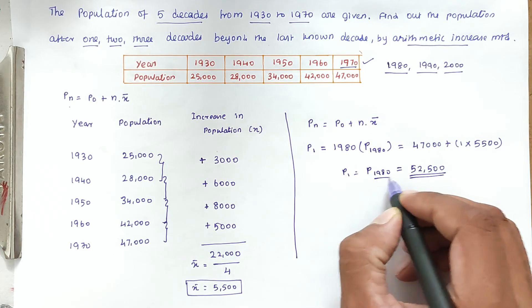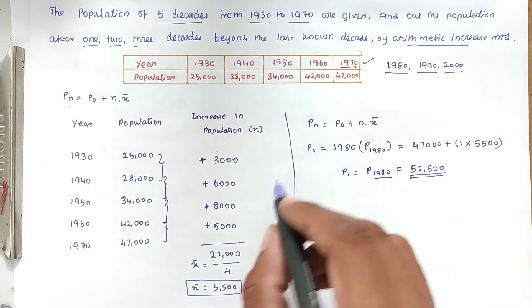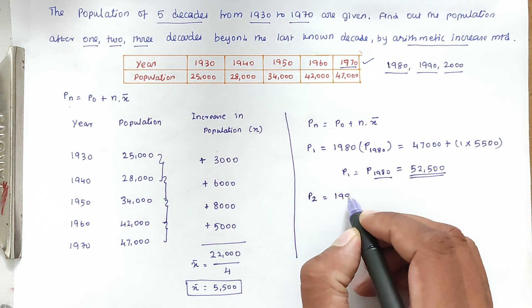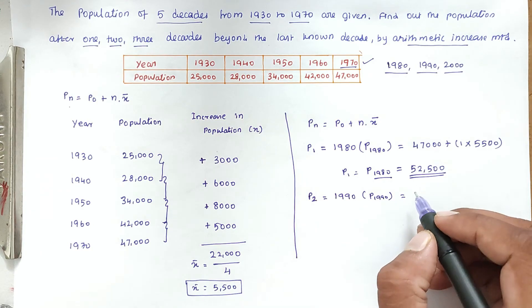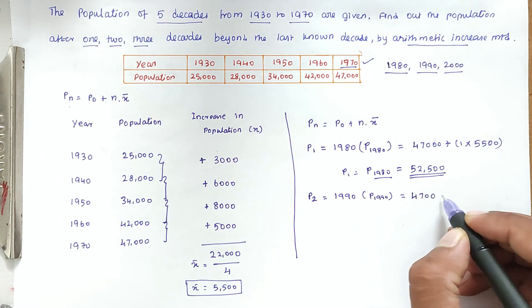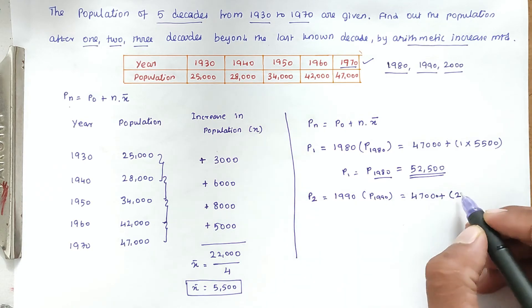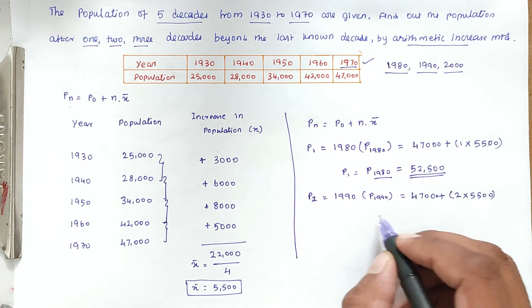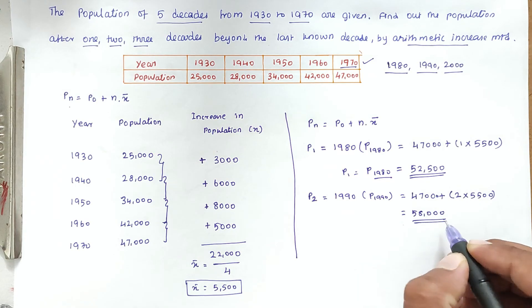For 1990 (n = 2): P₁₉₉₀ = 47,000 + 2 × 5,500 = 47,000 + 11,000 = 58,000. So the population forecast for 1990 is 58,000.